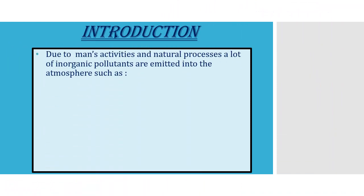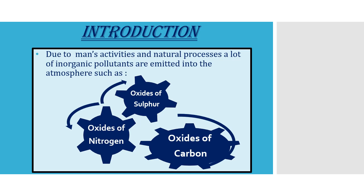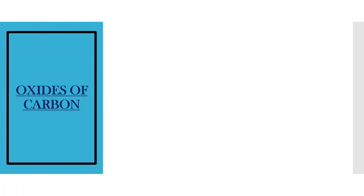Now to begin with, due to man's activities as well as natural processes, a lot of inorganic pollutants are emitted into the atmosphere, such as oxides of sulfur, oxides of nitrogen, and oxides of carbon. In this particular video, we are going to concentrate on oxides of carbon.